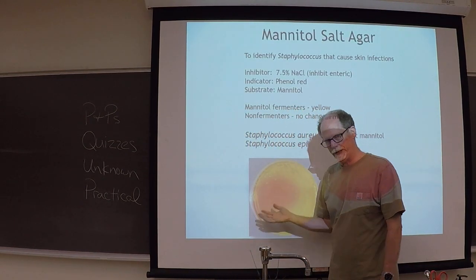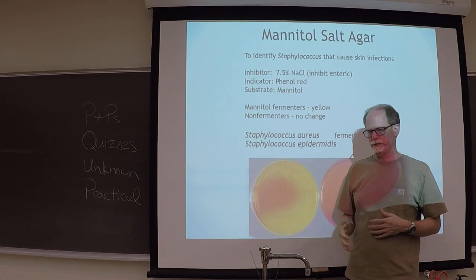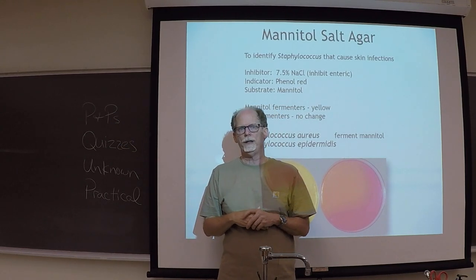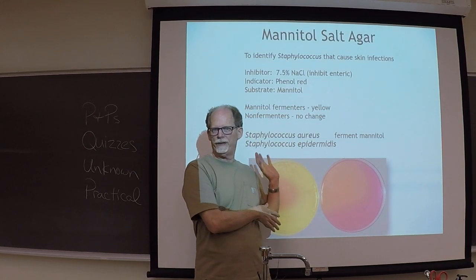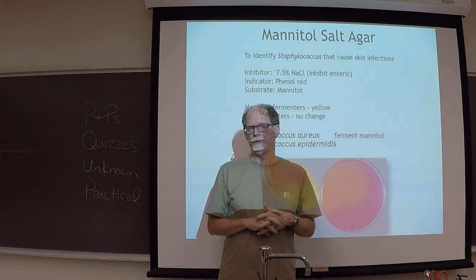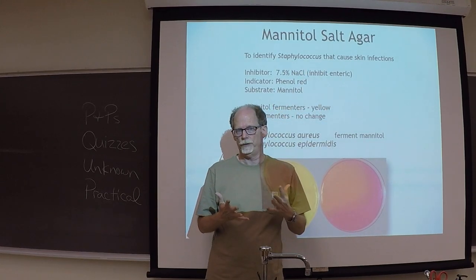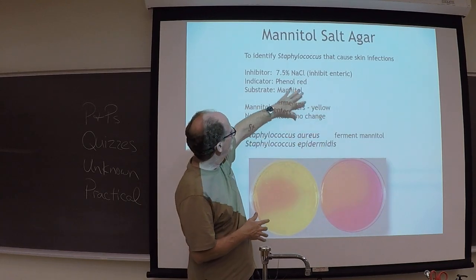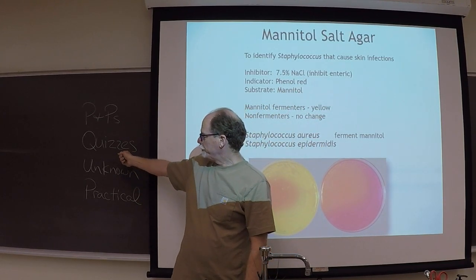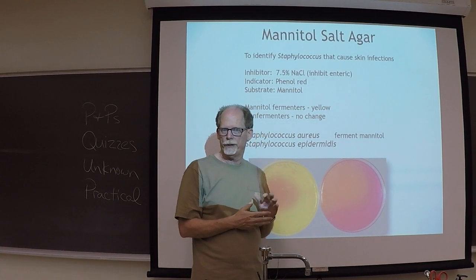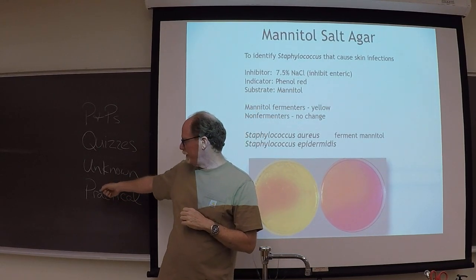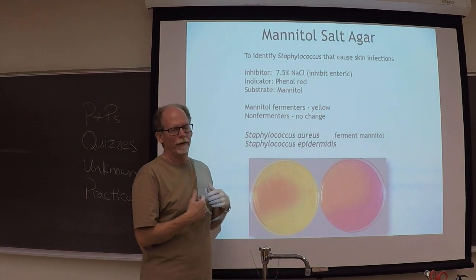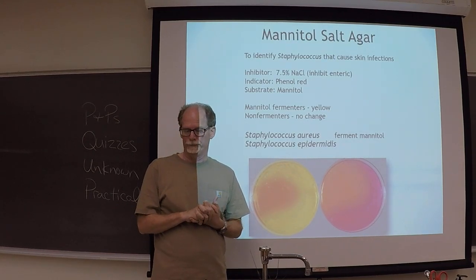If we did this in lab, we would be inoculating these media with bacteria and they would grow on the surface. At this point we've covered five different stains, and you've been doing PMPs for those stains. You're going to be doing PMPs for this media — the directions for those are different. I made a video for the PMPs to explain what to put. This PowerPoint will also help you identify your unknown bacteria.